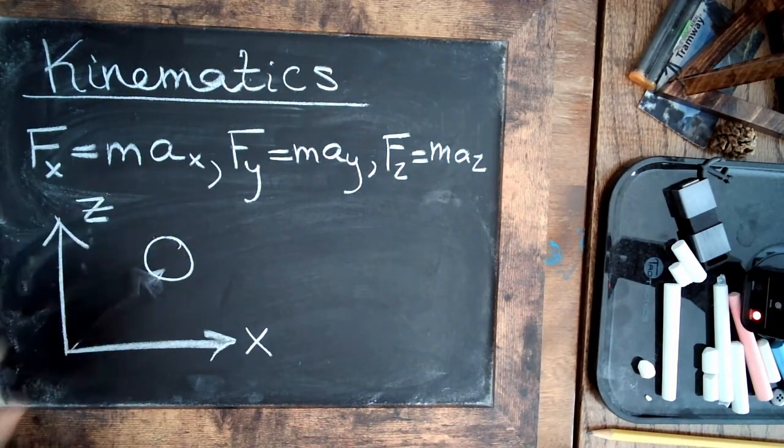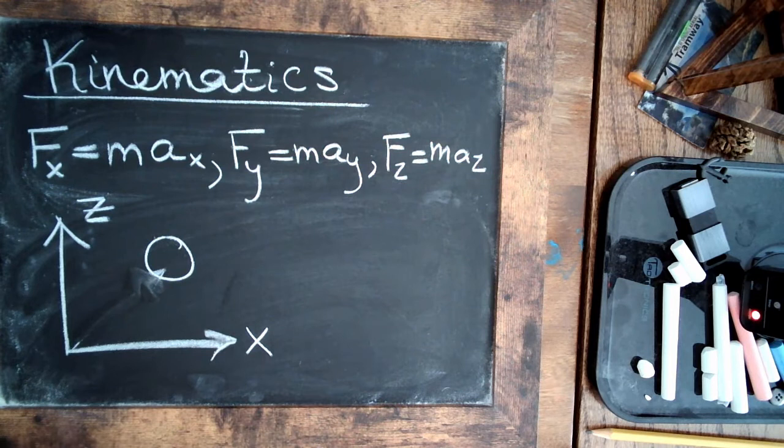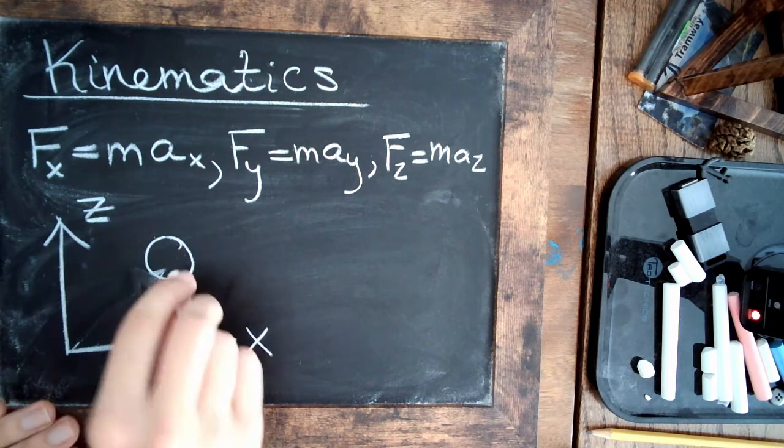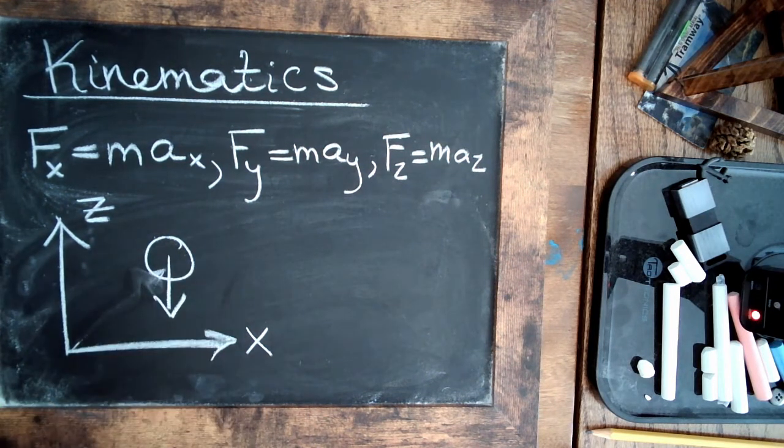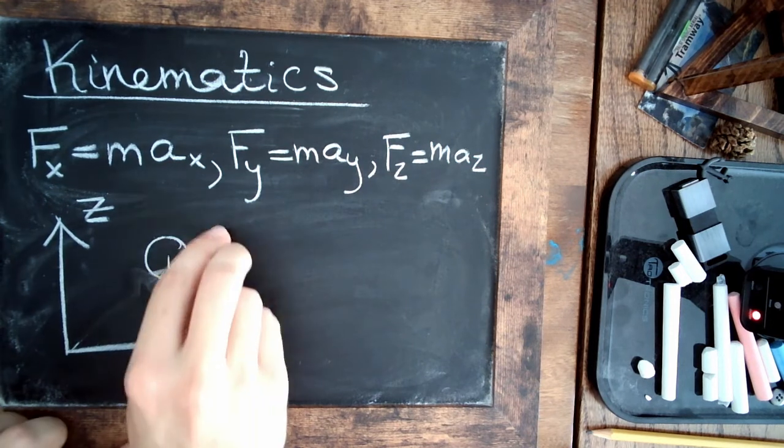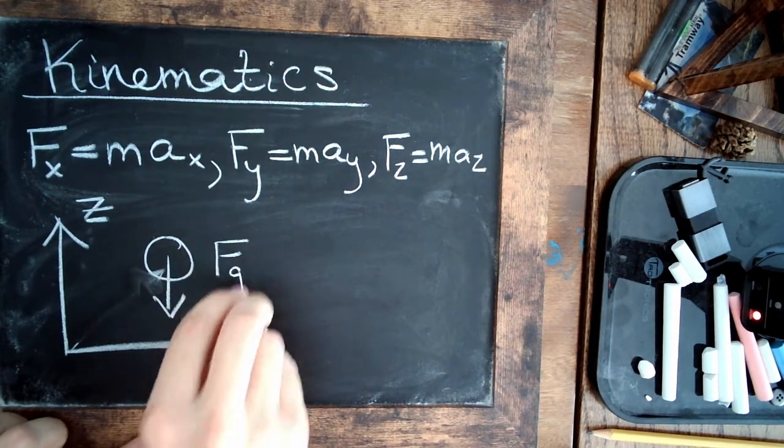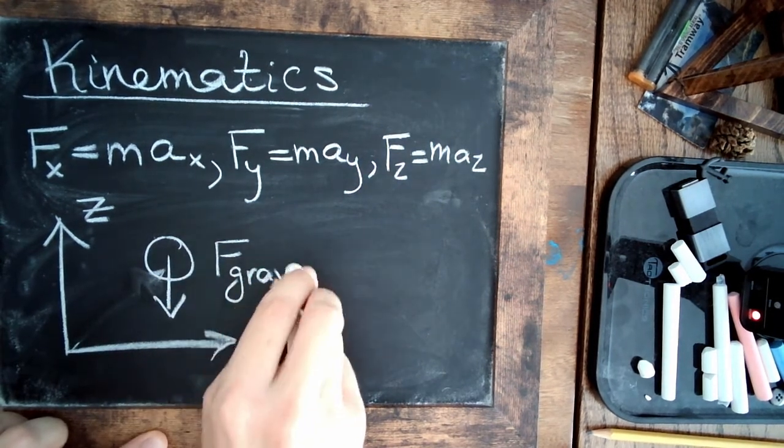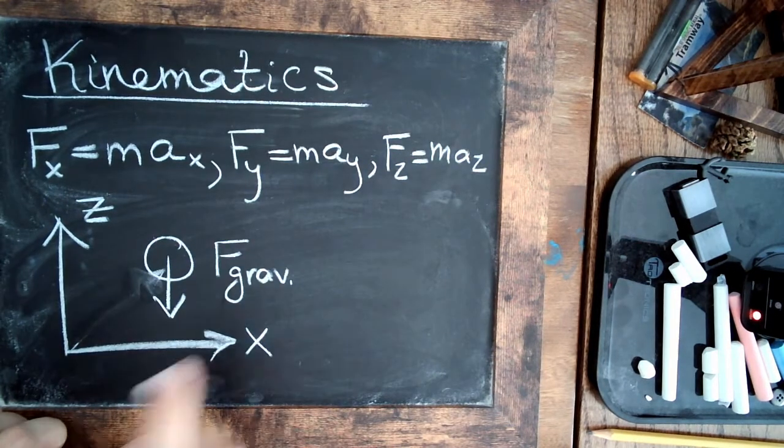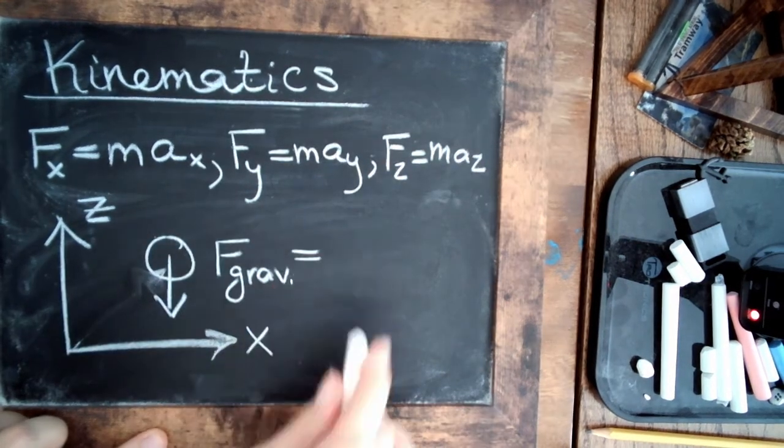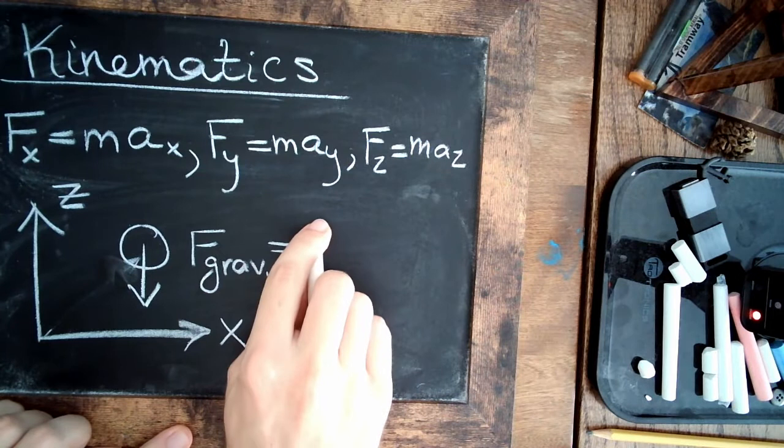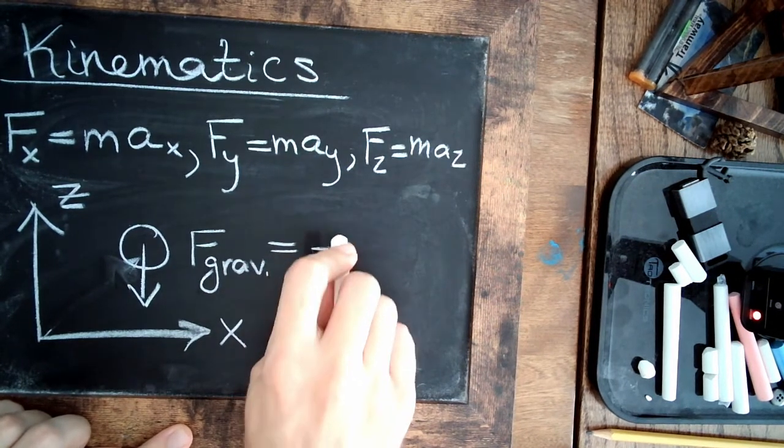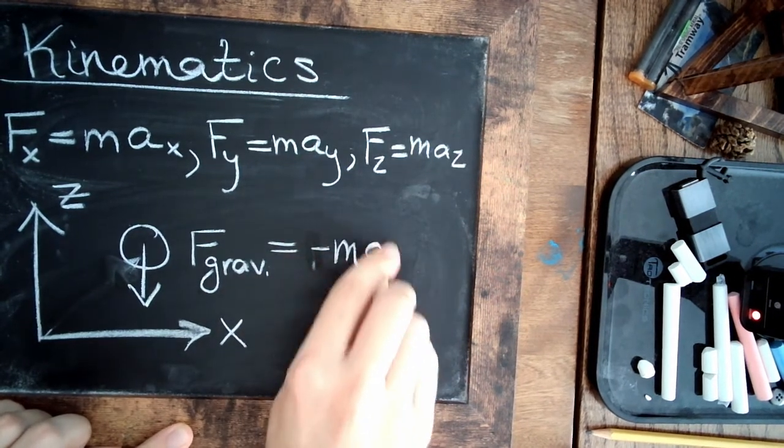But if we want to look at the forces, the only force acting on the ball at this point in time is going to be the downward force of gravity. So say f for gravity, which is acting down. So how do we write that? We say force of gravity is just minus mg.